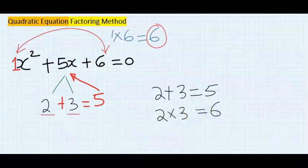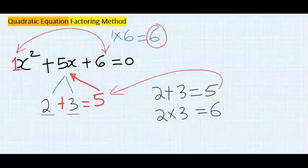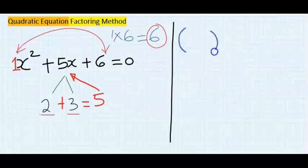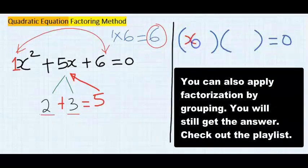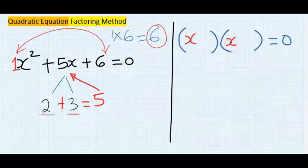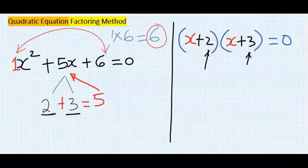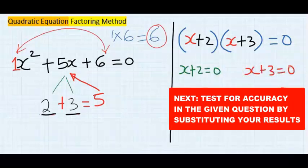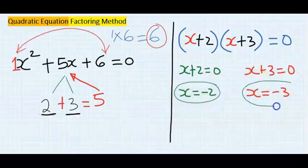Two and three satisfy both conditions. Next, open two brackets equal to zero, writing x in each bracket. The two numbers are plus two and plus three, placed into the brackets. Solving gives x plus two equals zero and x plus three equals zero, so our answers are x equals minus two and x equals minus three.